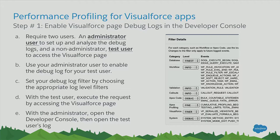How do you enable Visualforce page debug logs in developer console? It's very simple. You will need an administrator user and a test user. Use your administrator user, log in, and set up the debug logs for the test user. Then set up the debug log filters. There are a huge list of filters like database, workflow, validation, Visualforce system, and you can set them to fine, info, debug — whatever you want, depending on what you are profiling and how deep you want to dig into the issue.